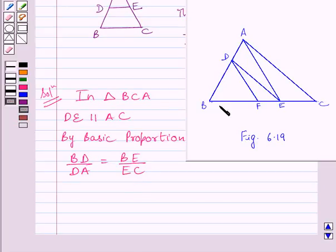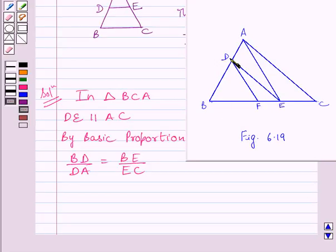Now let us consider triangle BEA. In triangle BEA, FD is parallel to AE. Also, FD is intersecting BE and BA at two distinct points. So this implies, by the basic proportionality theorem, BD upon DA is equal to BF upon FE.